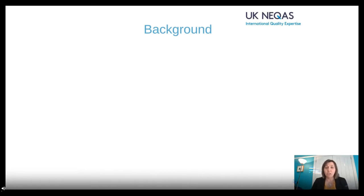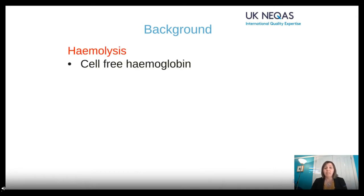A little bit of background on serum indices. When we're talking about hemolyzed specimens, this is the red colour you see — the hemoglobin from within the cells that has leached out into the serum or plasma. This might occur because the serum has been on the cells for a prolonged period of time, or there may have been problems during collection — the tourniquet may have been too tight or the wrong gauge needle used. The contents of the cells, including the hemoglobin, have leaked out making the serum or plasma red. It is the heme, the iron in the heme, that gives this red colour.